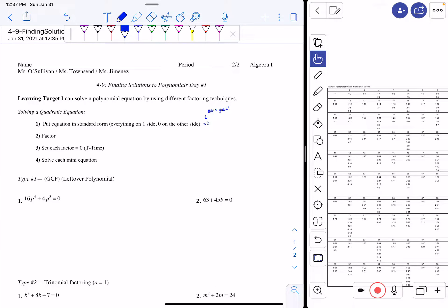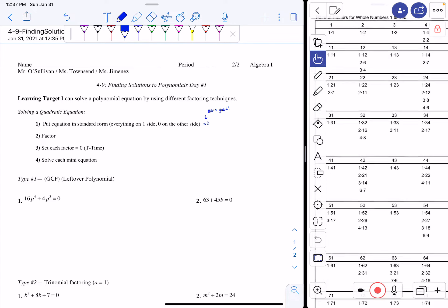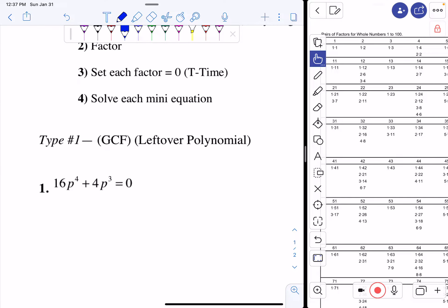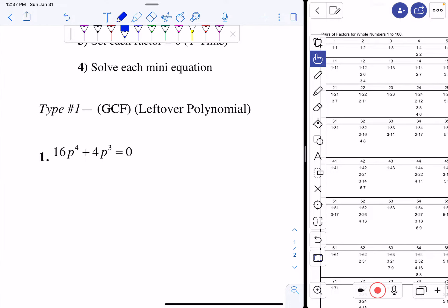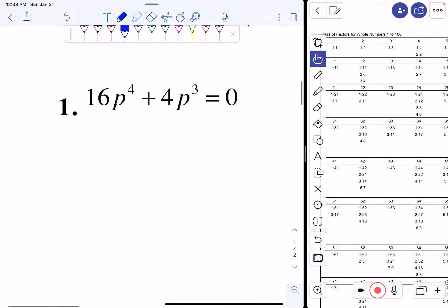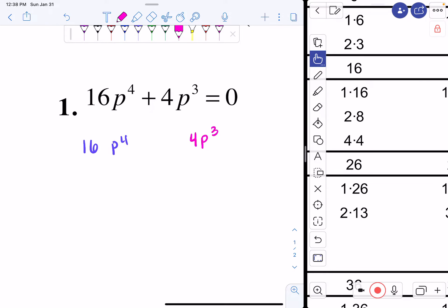The first type of polynomial factoring solving we're going to be looking at is the GCF leftover which requires us to take out our factor pair sheet from 1 to 100. For our first example we have 16p to the fourth plus 4p cubed equal to zero. The first thing we do is we want to find the prime factorization of each term. So I want to find the prime factorization of my 16p to the fourth and my 4p cubed.